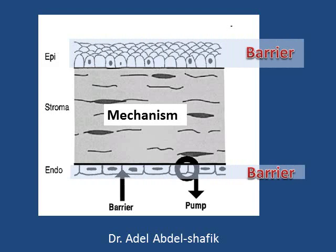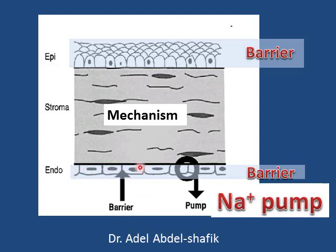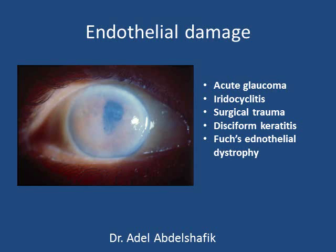The cornea is protected anteriorly by the epithelium and posteriorly by the endothelium. Both act as mechanical barriers preventing water from getting inside. Also, the endothelium on the back surface constantly performs what we call a sodium pump — it takes sodium from the stroma and pushes it toward the anterior chamber, and water follows. That is why the cornea maintains a lower water content.